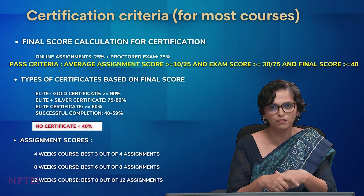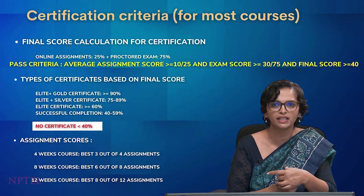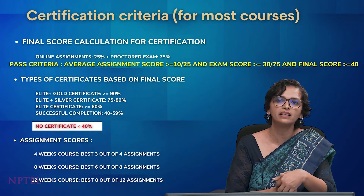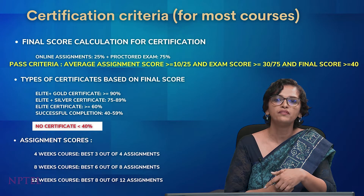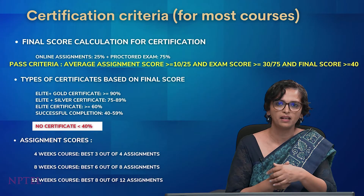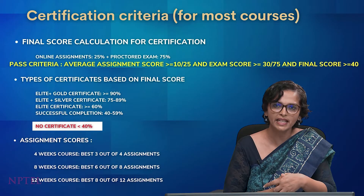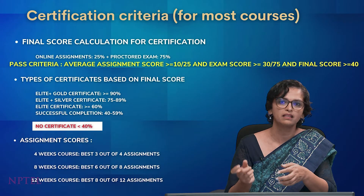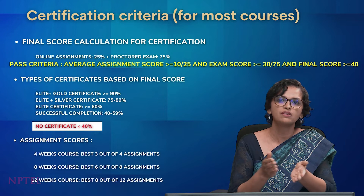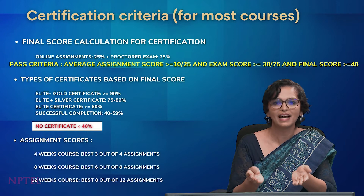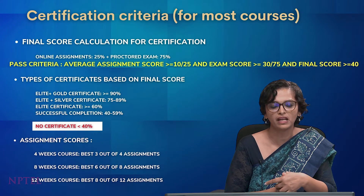It is an AND condition — both conditions must be satisfied — and the final score automatically becomes more than 40 out of 100. For the average assignment score, we take the best 3 out of 4 assignments for a 4-week course, the best 6 out of 8 for an 8-week course, and the best 8 out of 12 for a 12-week course. We average the best scores, and that is your average assignment score, which must be more than 10 out of 25.